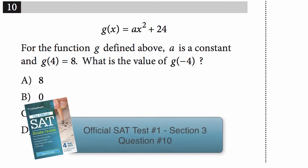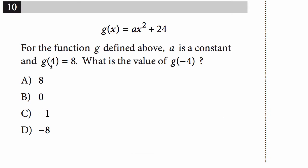So for number 10, they give us an equation and they tell us that g of 4 equals 8. That means when I plug in 4 into the equation, I get 8. They want to know what is g of negative 4. I'm not going to plug things in — I'm just going to look at my equation and realize that this is a squared equation, and we're going from 4 to negative 4.